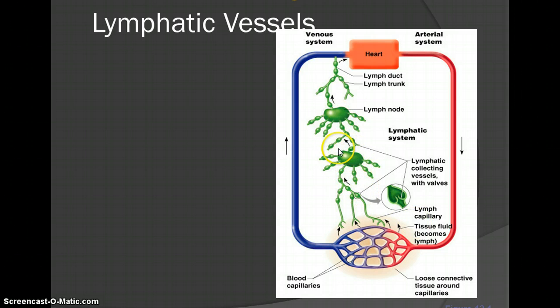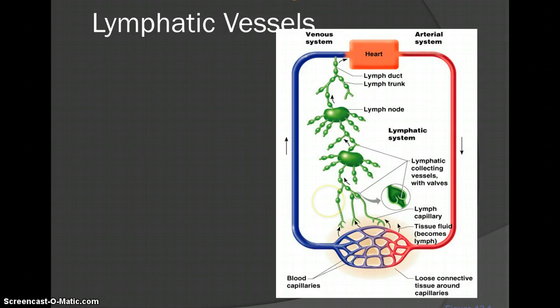There are lymphatic collecting vessels that have valves — notice the valves shoot up this way; lymph can't go back out. When you get a lot of those lymphatic collecting vessels, they'll go up into a lymph node. Like when you have strep throat, you feel your lymph nodes to see if they're swollen. If you have extra lymph, there's probably some kind of infection going on in your body.